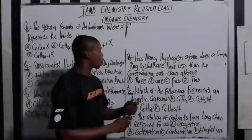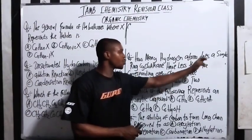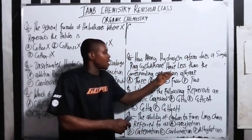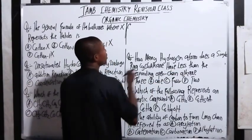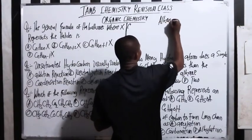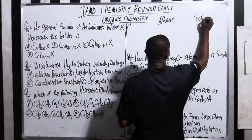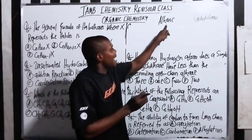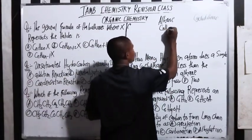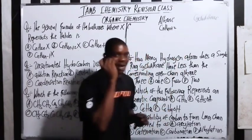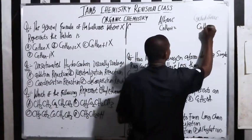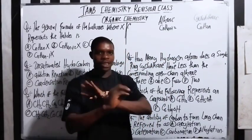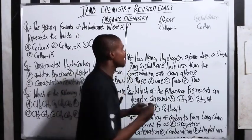Question three: how many fewer hydrogen atoms does a single-ring cycloalkane have compared to the corresponding open-chain alkane? Pay attention — this is very important. The alkane formula is CnH2n+2, while the cycloalkane formula is CnH2n. Let's take a typical example to understand this.